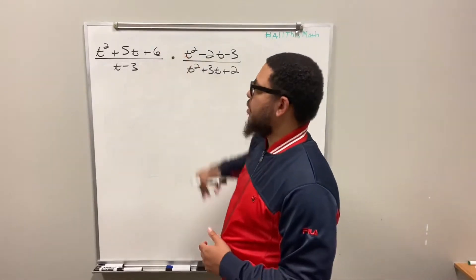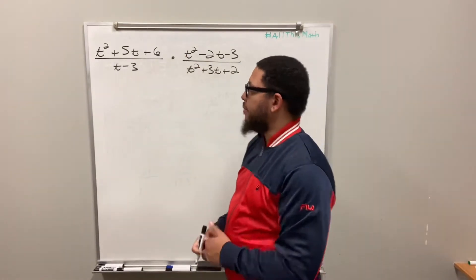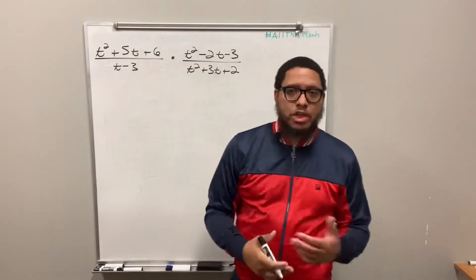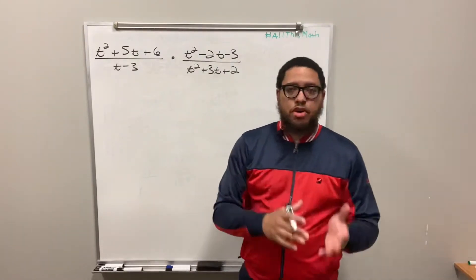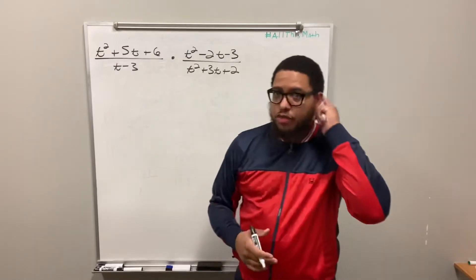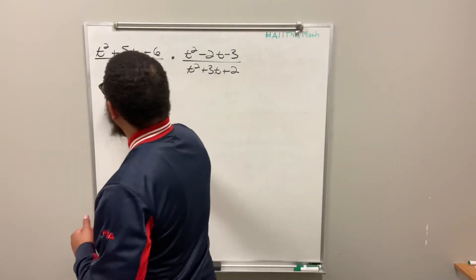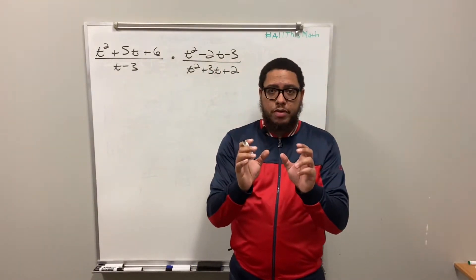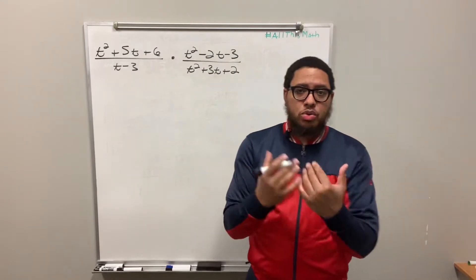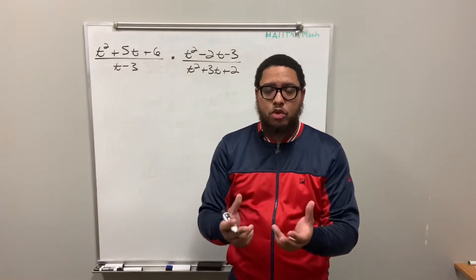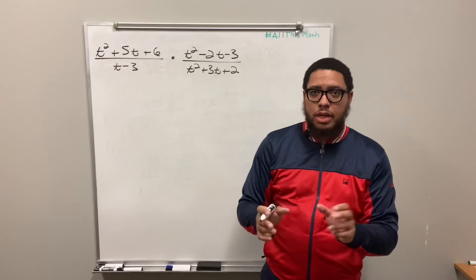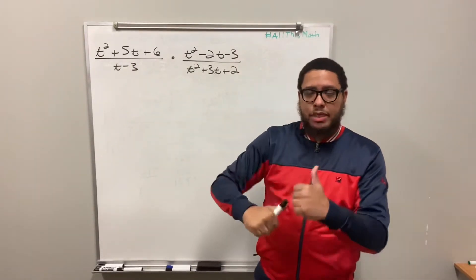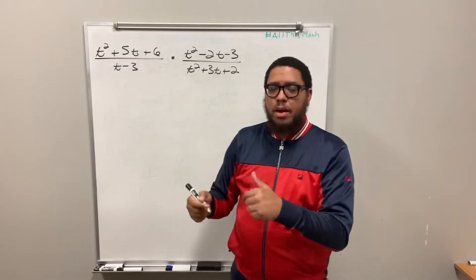Let's get started. This numerator — can I factor this? I can. This is a quadratic trinomial. t squared plus 5t plus 6 is a quadratic trinomial. We implement a method I like to call the reverse FOIL method. That means I'm going to make this expression into the form of two binomials, because usually when you use the FOIL method, you start with two binomials, multiply them out, and end up with a trinomial. Here we're going in the opposite direction — from a trinomial back to two binomials.